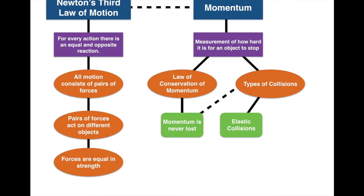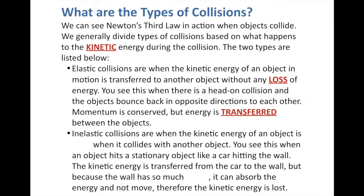Let's fill in the first part of our graphic organizer on types of collisions — elastic collisions. Momentum is conserved, momentum isn't lost — it's just transferred along with the kinetic energy to the other object. The second type is inelastic collisions: that's when the kinetic energy of the object is lost when it collides with another object. However, the momentum is still conserved.